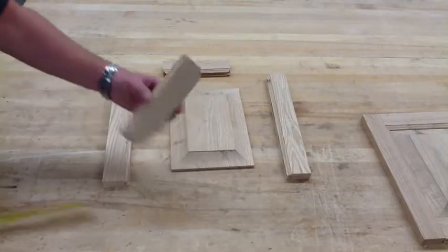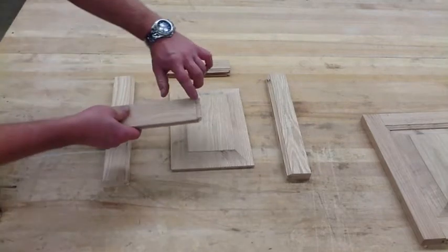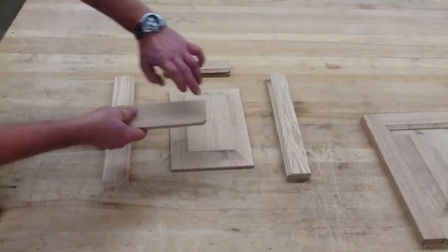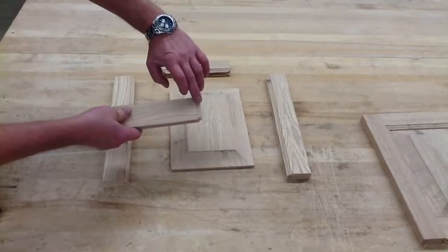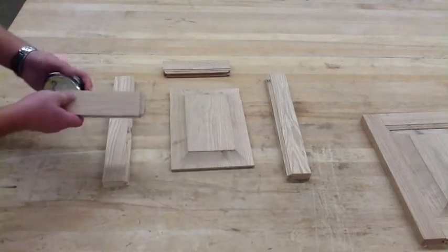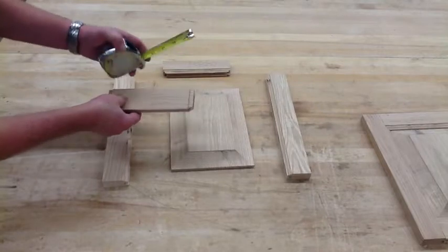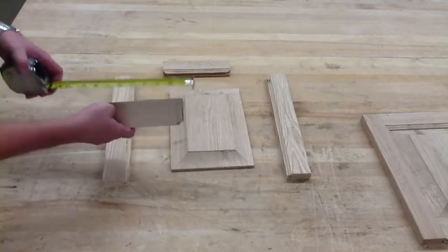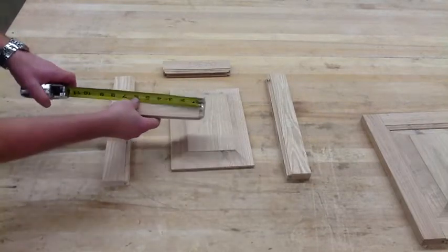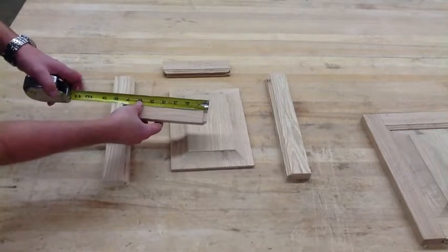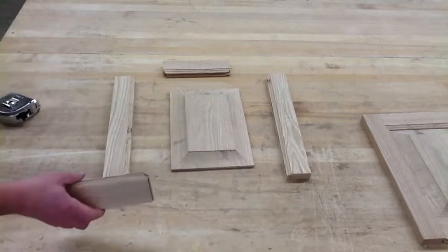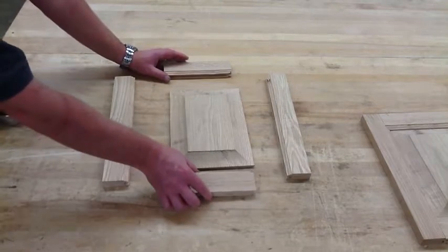But, here we have our rails. Here you can see that we have a tongue here that is going to protrude in. This is going to measure 3 eighths. So, if I take our tape measure across, it's basically 3 eighths of an inch. And if I were to measure all the way across, this one is at 7 and a quarter inches. So, same size as what we were using over there.